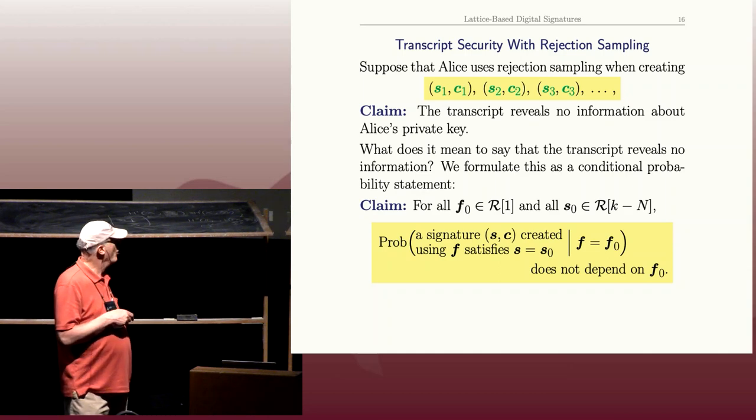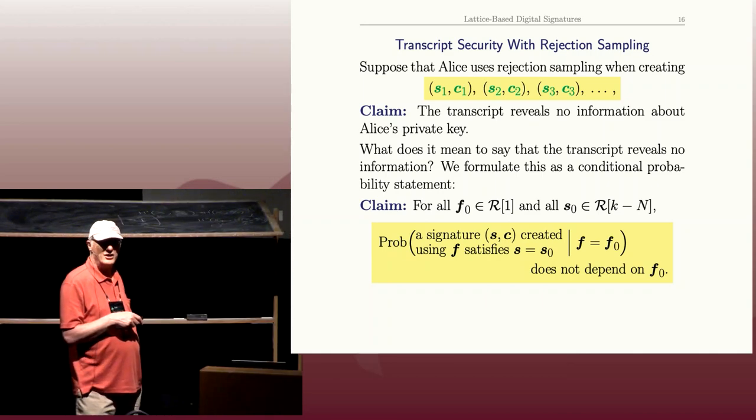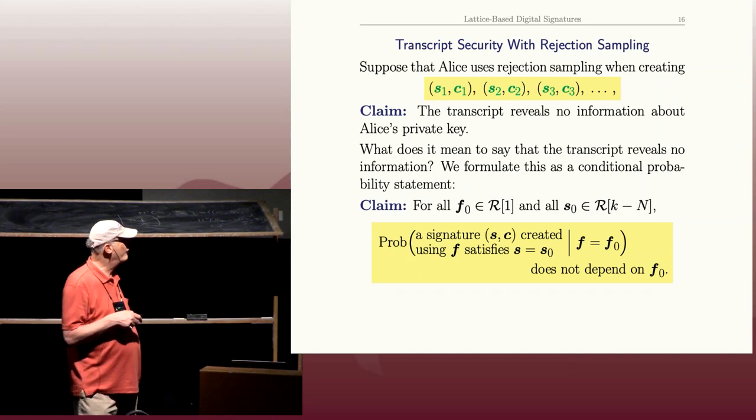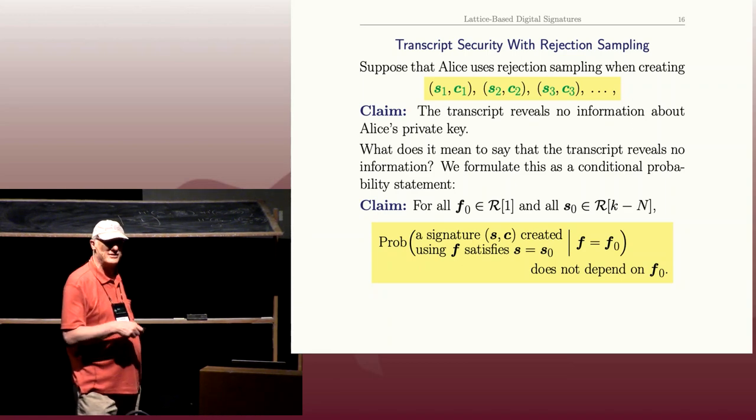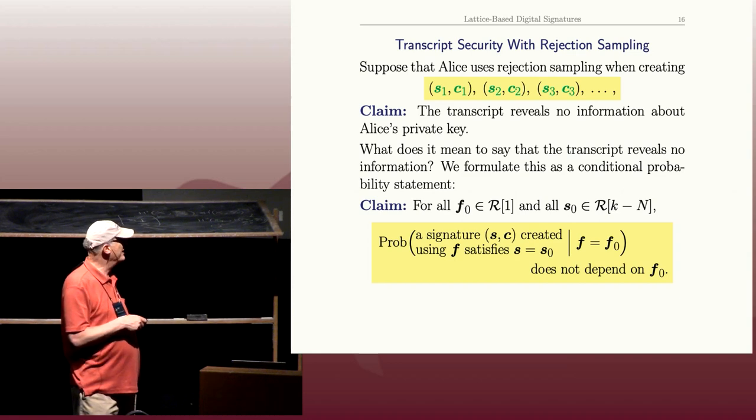But if I take a potential public key, a private key, and a potential signature, what's the probability that a signature created using F has S equals S_0, given—this is the conditional—that F is F_0? Okay? And I want that probability to be independent of F_0. So that would mean that if I used F_0 to create signatures and you used F_1 to create signatures and that person over there used F_2 to create signatures, our probability of getting a signature that used, included S_0, is the same.